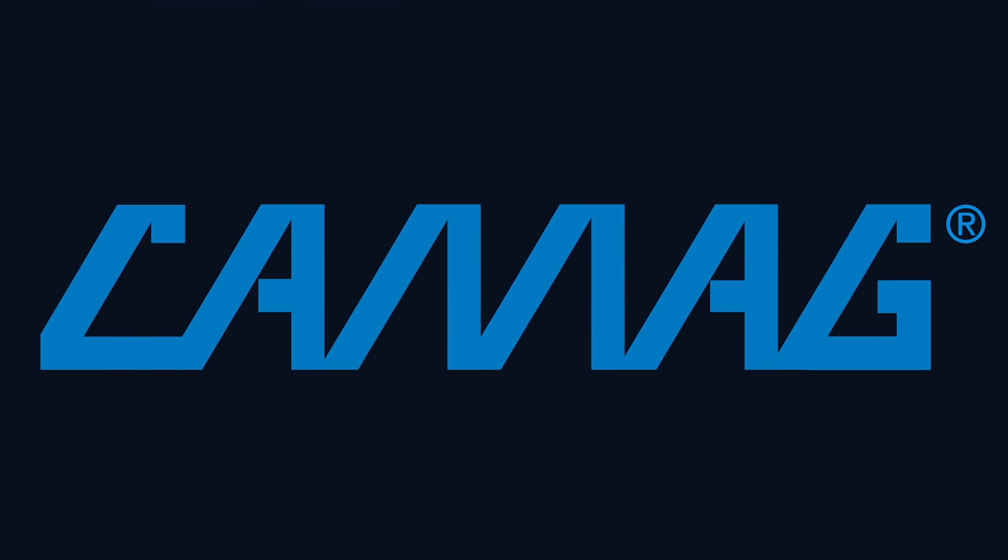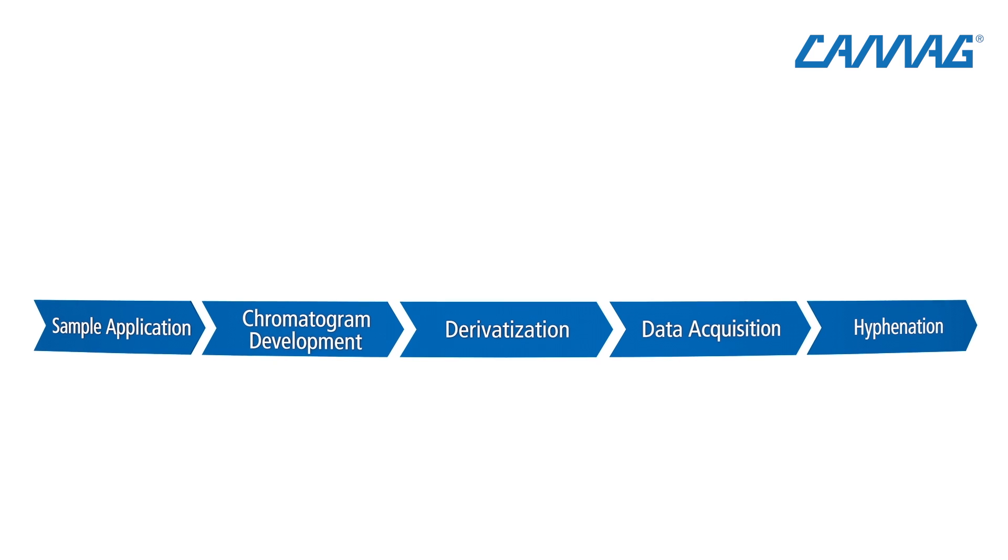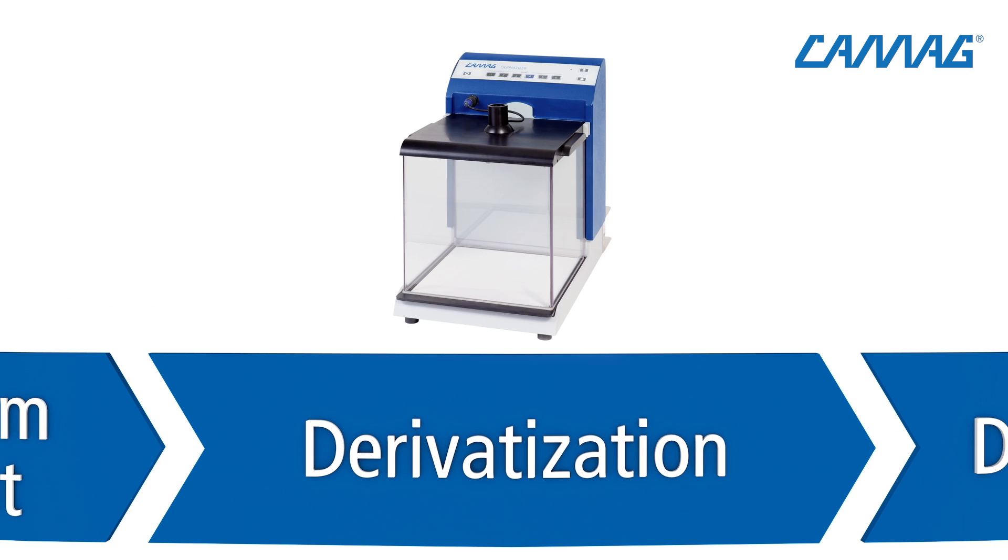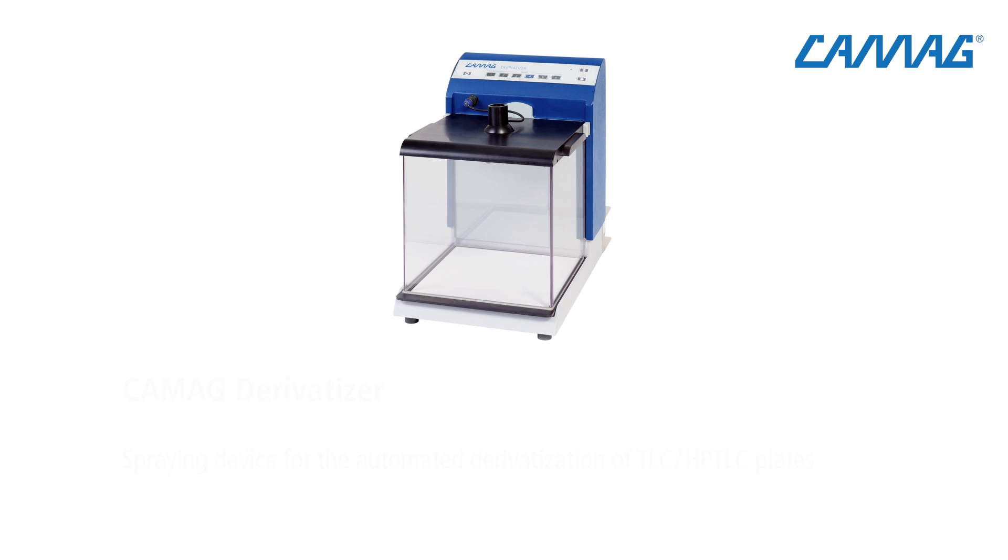CAMAG is the world leader in planar chromatography and provides instruments, software and consumables for all steps of the TLC HPTLC procedure. The CAMAG derivatizer is an automated spraying device which sets a new standard of reproducibility in the reagent transfer onto TLC plates by employing a unique micro-droplet spraying technology.